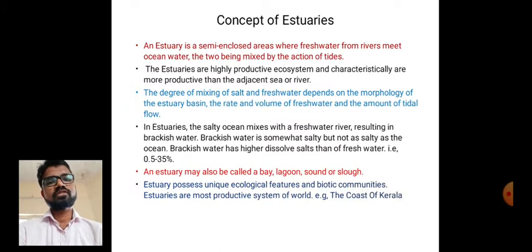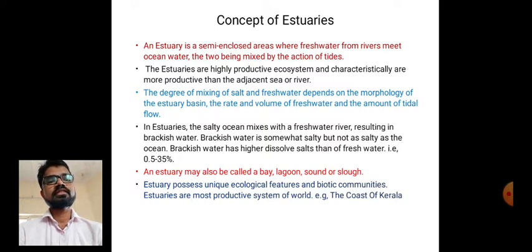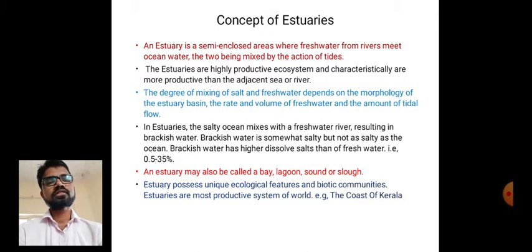Brackish water is where fresh water mixes with marine water. It is somewhat salty but not as salty as the ocean. Brackish water has higher dissolved salts than fresh water — about 0.5 to 3.5 percent. Estuaries may also be called a bay, lagoon, sound, or slough.